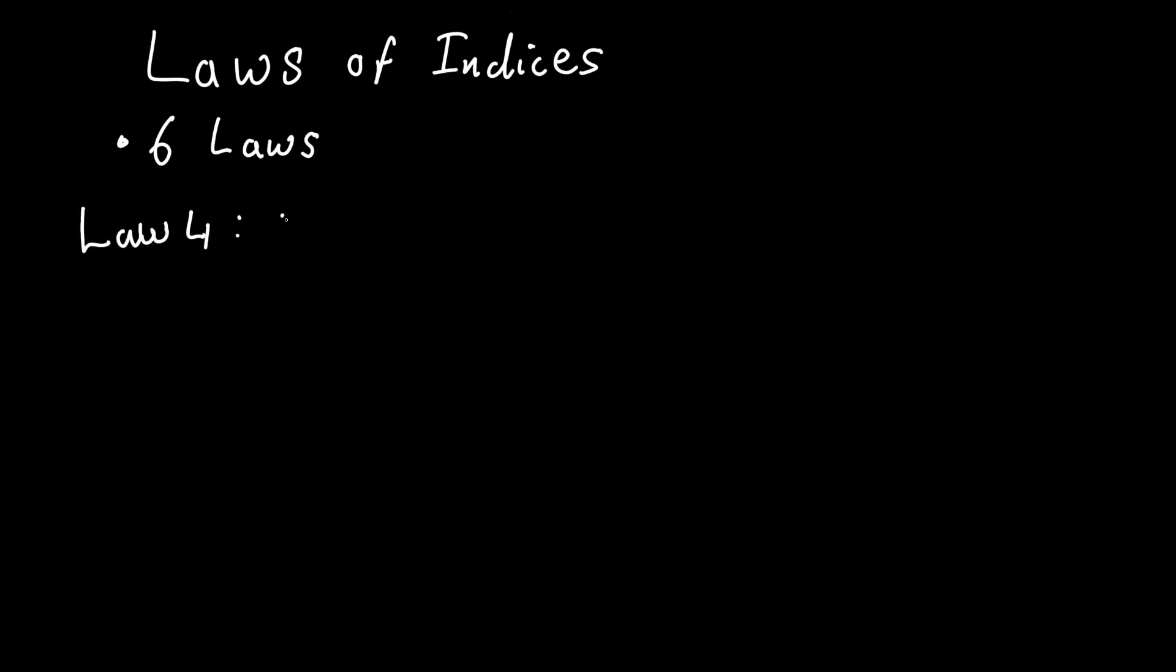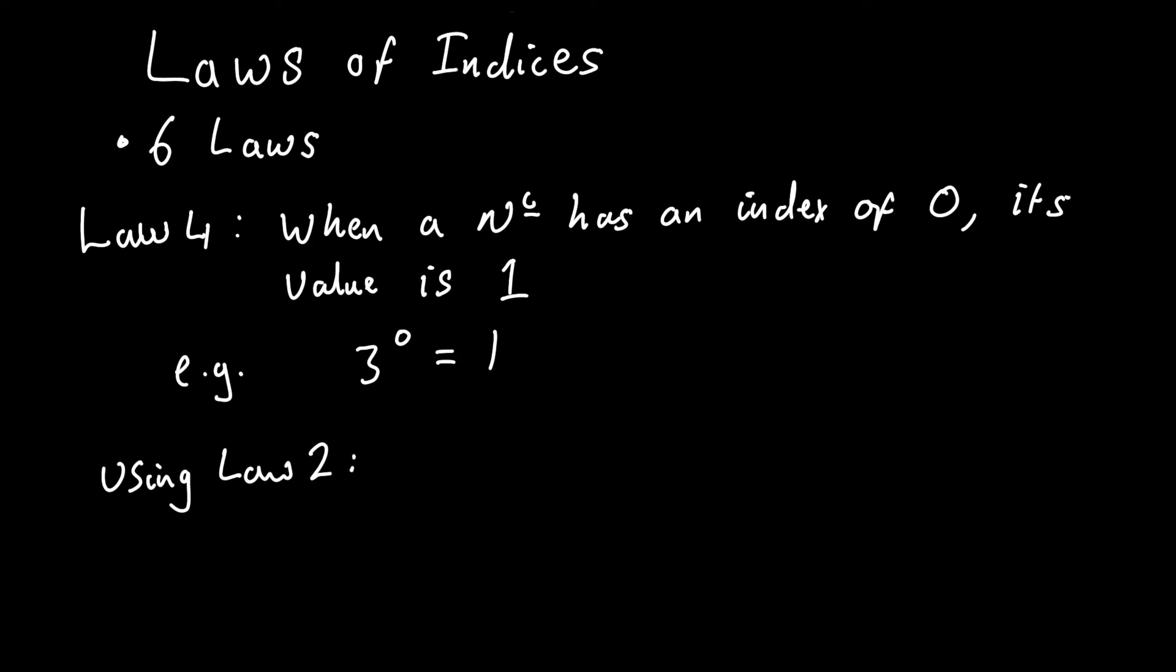Law 4: When a number has an index of 0, its value always equals 1. An example might be 3 to the power of 0. And we can see why this is the case by looking at law 2. If we divide 3 squared by itself, law 2 states that the indices will cancel out, resulting in 3 to the power of 0.